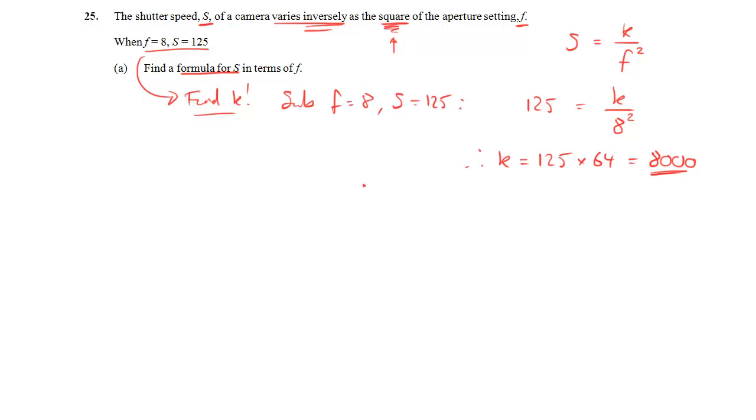But we want a formula for s. So we want s equals k over f squared. So now it is s equals 8,000 over f squared. And there is our answer to part a.